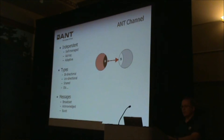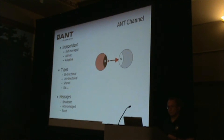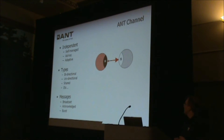The most important thing to understand about ANT is the ANT channel. An ANT channel is basically a logical link between two ANT nodes. If you understand ANT channels, everything else is based off of this simple concept and starts to make a lot more sense. ANT channels are independent and self-managed — there's no central coordinator in any ANT network; each channel manages itself.